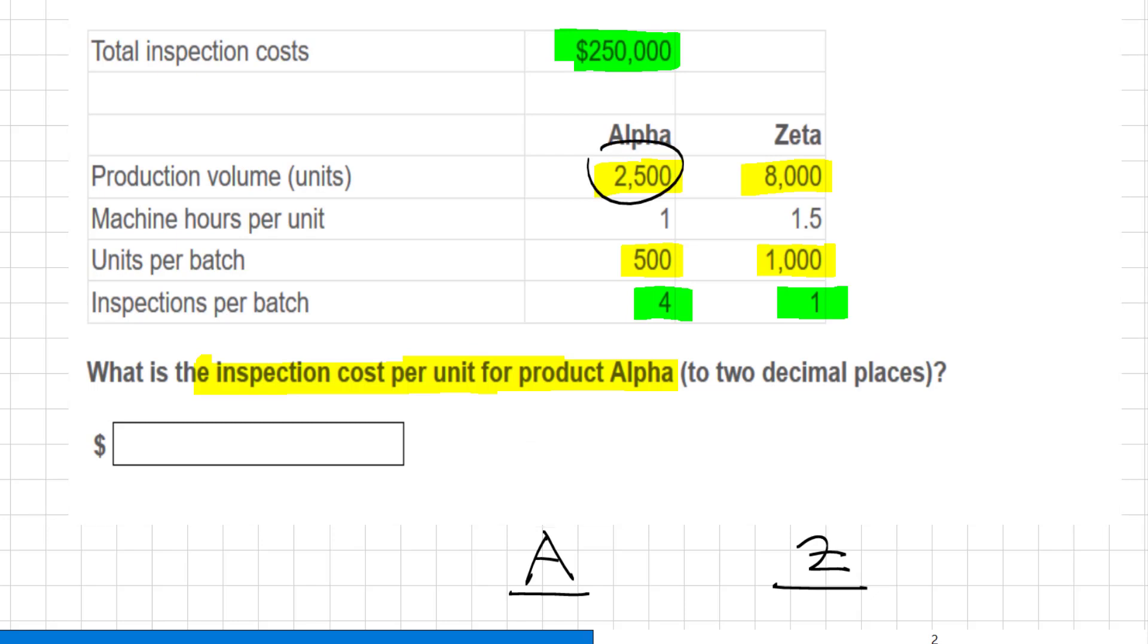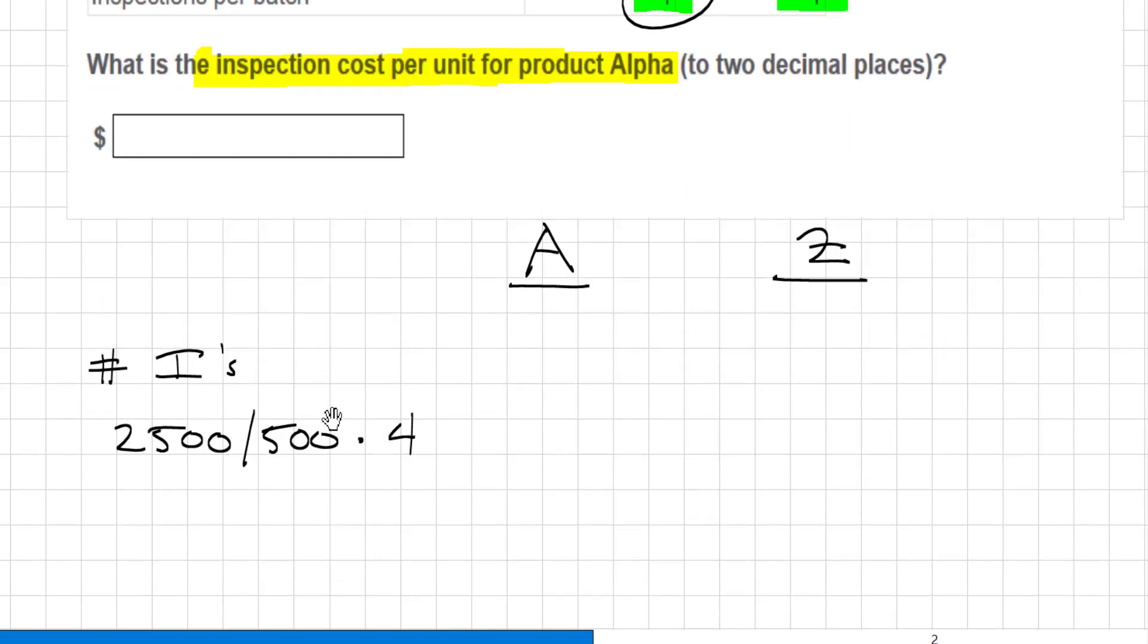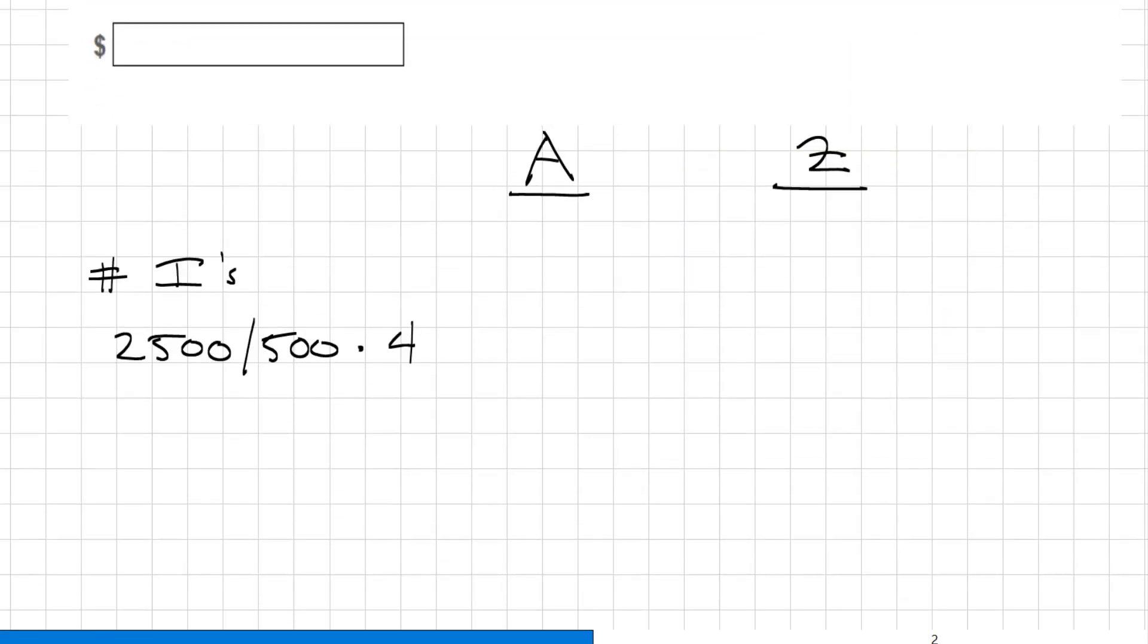Everybody see where that comes from? 2500 divided by 500 multiplied by 4. That will be equal to 20 inspections.